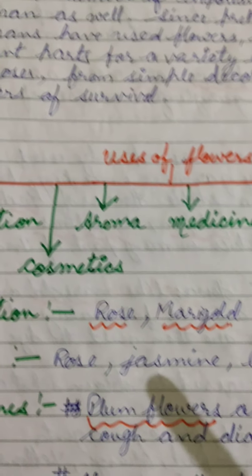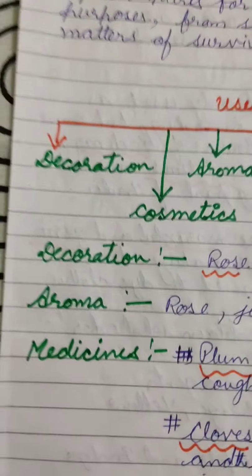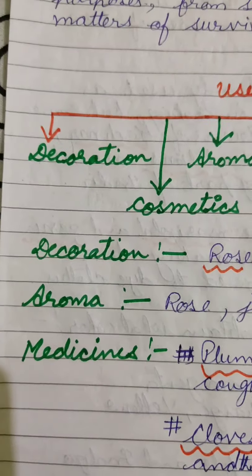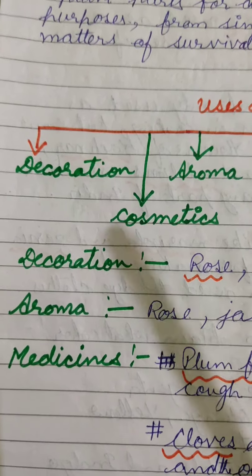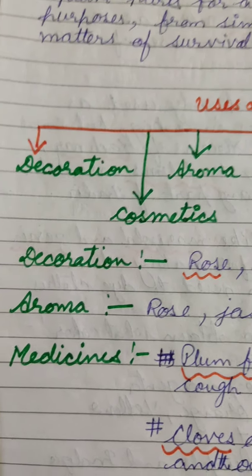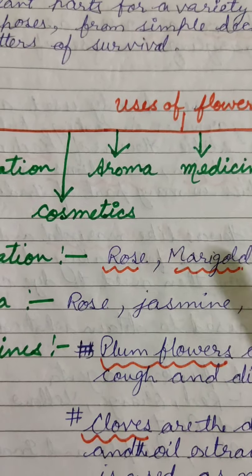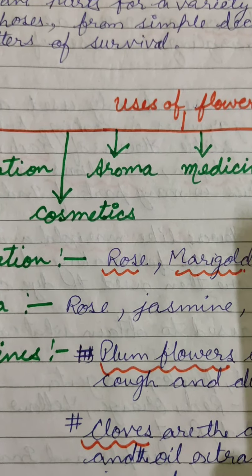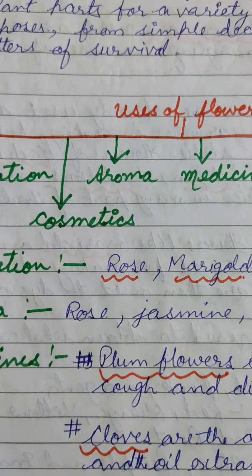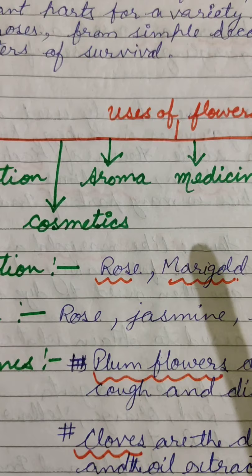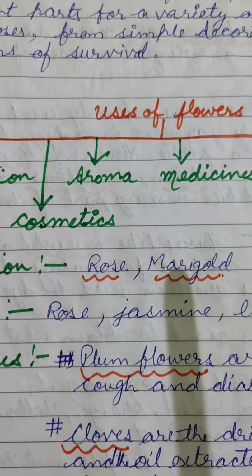First we discuss about decoration. Almost all flowers are used for decoration purposes — in temples, in wedding halls, and in different ceremonies at houses. Flowers are also used as gifts by making bouquets. Some flowers like rose and marigold are the flowers most commonly used for decoration purposes.